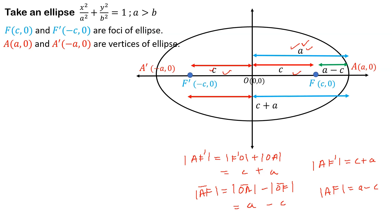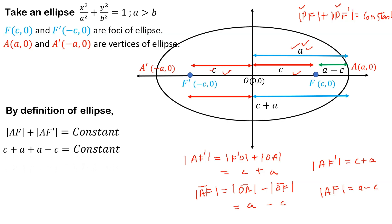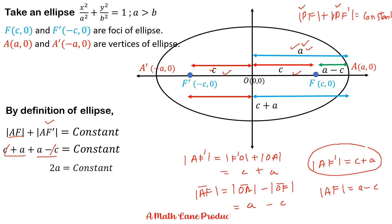Now we apply the definition of the ellipse at point A. By definition, AF plus AF' equals constant — we have replaced point P with point A. Substituting our values: AF' equals c plus a, and AF equals a minus c. The c and minus c cancel, therefore the constant equals 2a, as required.